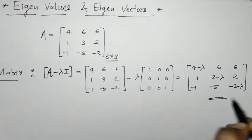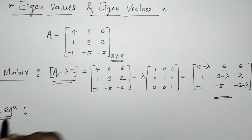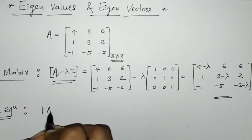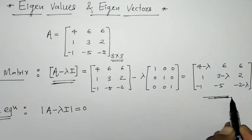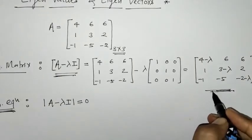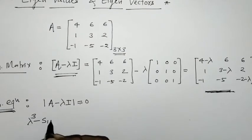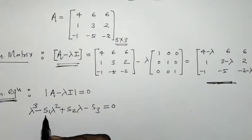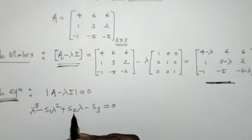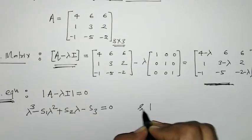Now we have found the matrix A minus λI. Next, we have to find the characteristic equation, which is given by the determinant of A minus λI equals zero. When we solve this determinant and set it equal to zero, we get the characteristic equation of the form λ³ minus S1·λ² plus S2·λ minus S3 = 0, where S1 is the sum of diagonal elements, S2 is the sum of minors of diagonal elements, and S3 is the determinant of the matrix.